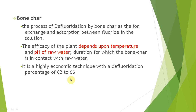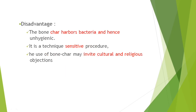Bone char follows the same process — it is put into water and adsorbs fluoride, but it depends on the temperature and pH of the water. It is more economical than activated alumina, but the main problems are that it can harm bacteria, it is an unhygienic method, very technique-sensitive, and the biggest problem in the Indian scenario is cultural and religious objections, since it involves bones of dead animals.